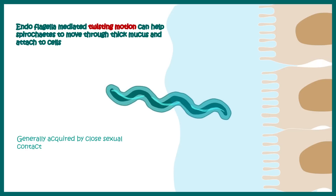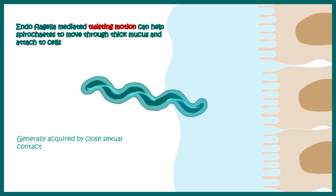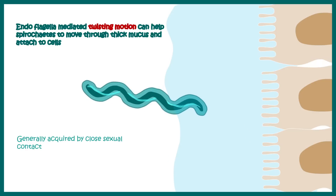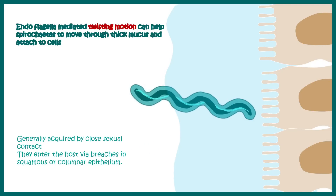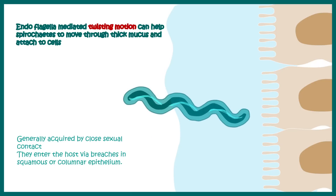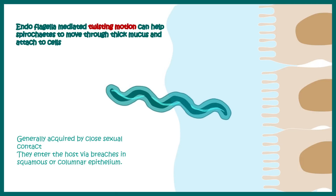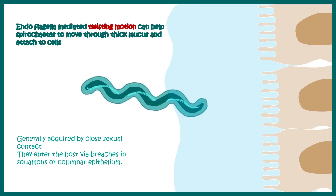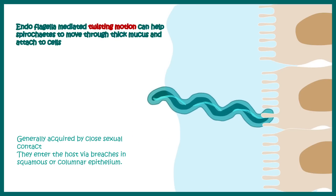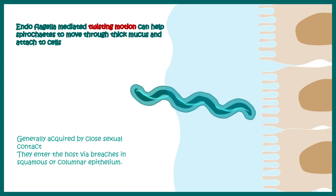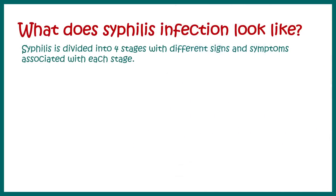Generally syphilis is acquired by sexual contact. Whenever these bacteria find any breaches in the squamous or columnar epithelium, they make their way inside — that is how it is transmitted.